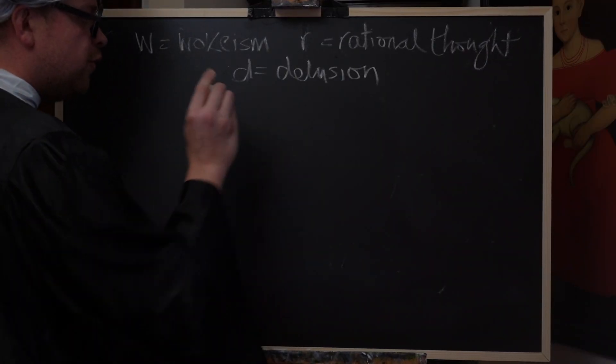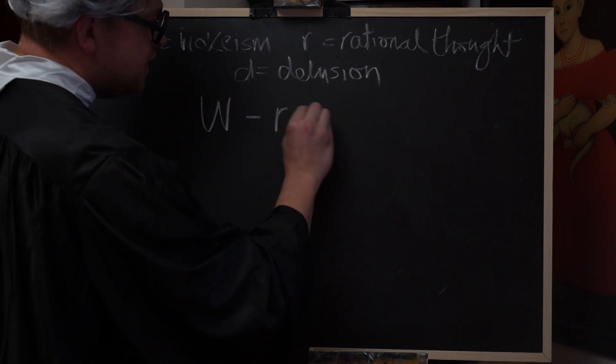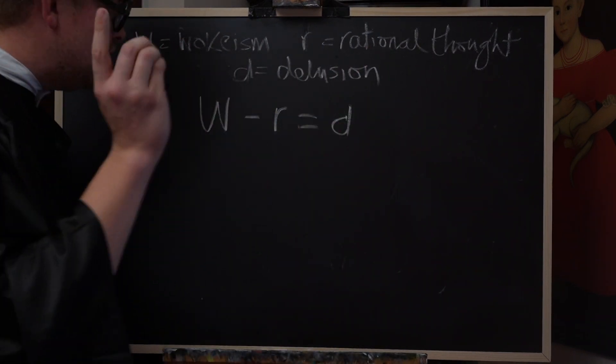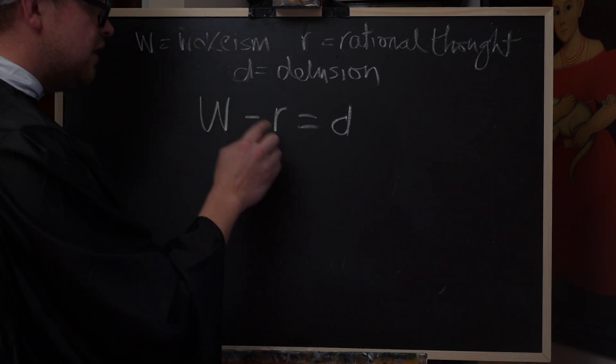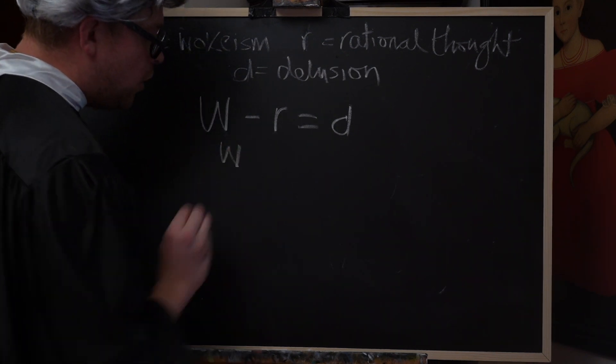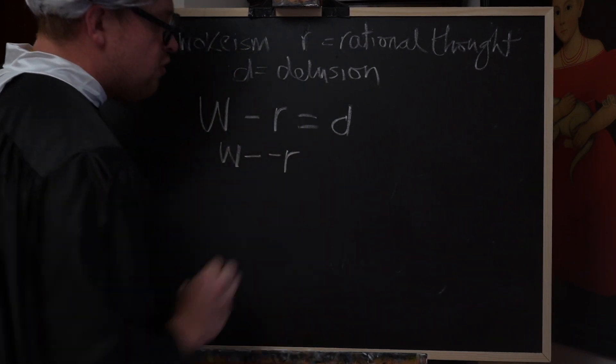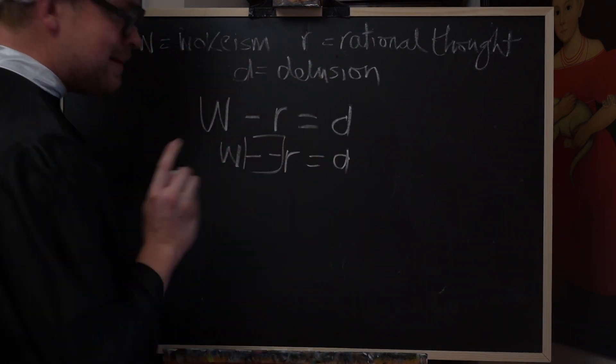So if we take W, wokism, and we minus R, rational thought, then we are left with D, delusion. Ironically, of course, all rational thought involved in wokism is always a negative value. So it is wokism minus minus rational thought equals delusion. This tool here can become a plus, meaning also that wokism plus rational thought equals delusion.